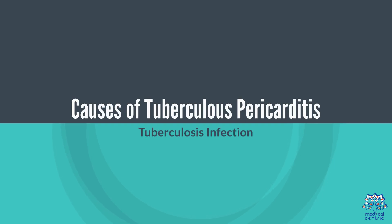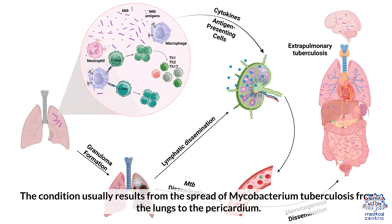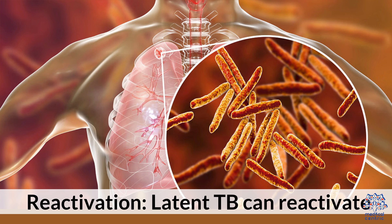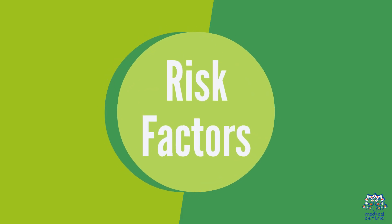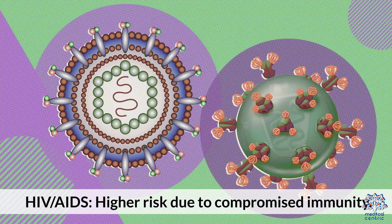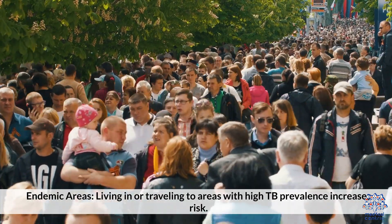3. Causes of Tuberculosis Pericarditis — Tuberculosis Infection: The condition usually results from the spread of Mycobacterium tuberculosis from the lungs to the pericardium. Reactivation: Latent TB can reactivate, especially in those with weakened immune systems. Risk Factors: HIV/AIDS — higher risk due to compromised immunity. Endemic areas — living in or traveling to areas with high TB prevalence increases risk.